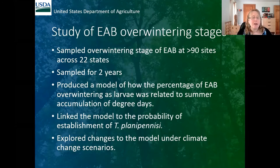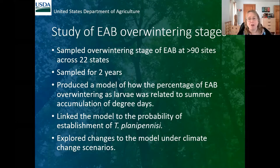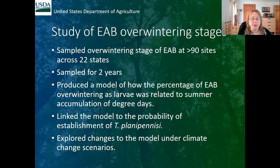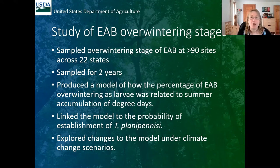We conducted a very large nationwide study of the stages in which EAB overwintered. We sampled overwintering stages at over 90 sites in 22 states, and did this sampling over two years. My co-author Melissa Warden produced a model looking at how the percentage of EAB overwintering as larvae was related to summer accumulation of degree days. We then linked this model to the probability of establishment of Tetrastichus planipennis and explored changes predicted under climate change scenarios.